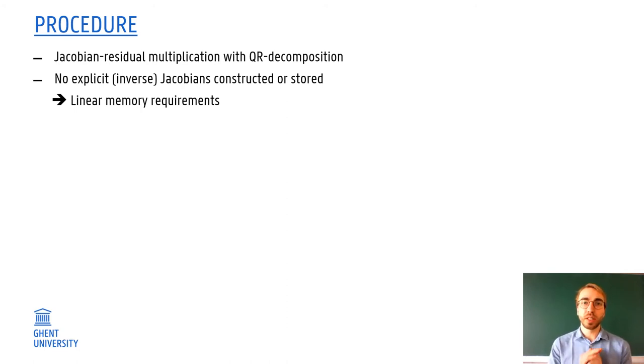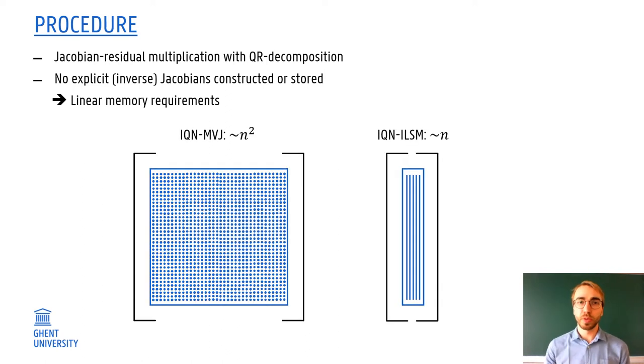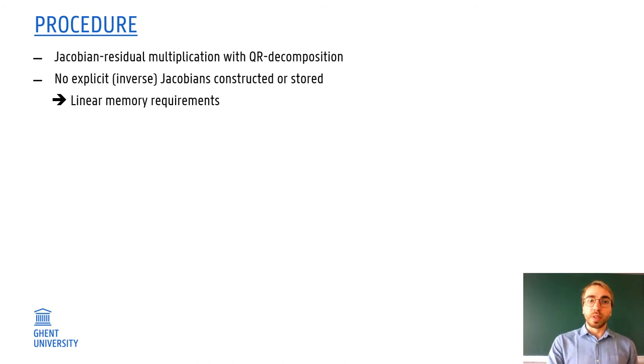But how is this now done in practice? Well, the Jacobian residual multiplication is done with a QR decomposition. This means that no explicit inverse Jacobian has to be constructed or stored, and this means that the memory requirements are linear. To make this more visual, in IQN-MVJ, the entire Jacobian matrix has to be stored, which equals n-squared values. However, in IQN-ILS, only a few matrices with columns of n elements have to be stored. The number of columns will be a lot less than the number of degrees of freedom. So the requirement for storage is only proportional to n and not n-squared. This is a very important benefit.